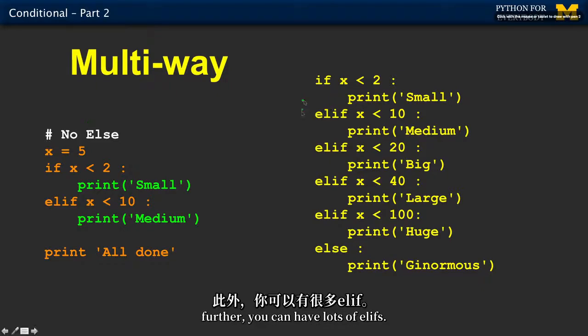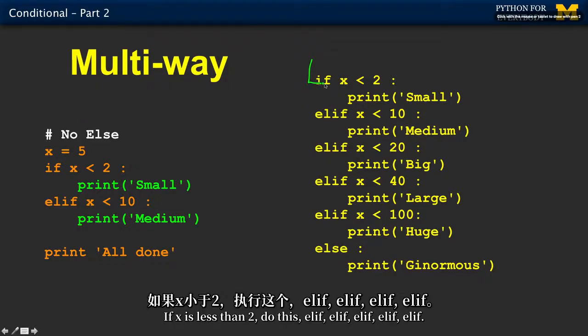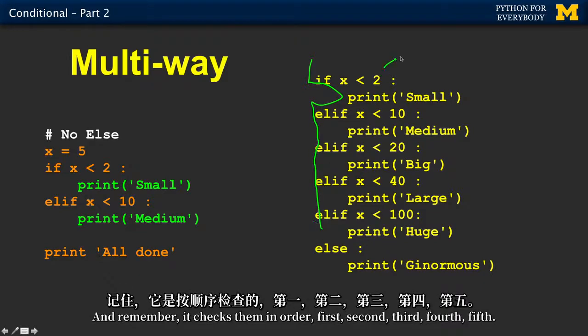Further, you can have lots of elifs. If x is less than two, do this. Elif, elif, elif, elif, elif, elif, elif. And remember, it checks them in order. First, second, third, fourth, fifth.